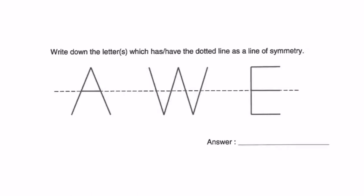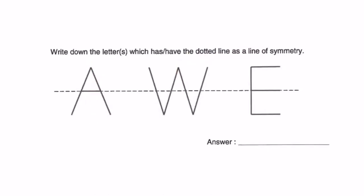You may be wondering that the letter A is symmetrical, because you can form a line down and left and right matches when folded. For W, same thing - if you draw a line down, left and right matches. But you look at the question: it says you have to use the dotted line given. I cannot use a different line. So if I fold the top of the letter A to the bottom, it doesn't match. So A is definitely out.